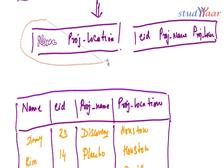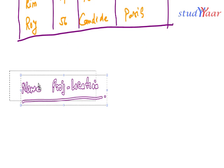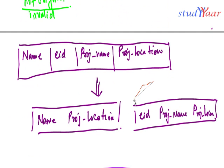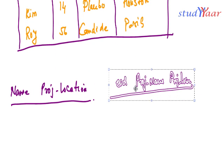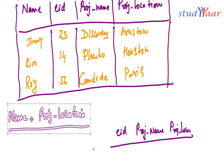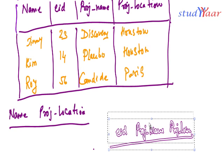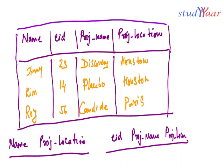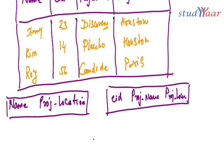Now I have my complete original table. Since I have decomposed it into two tables, let's do the decomposition. I have the original table and my two new decomposed tables. Let's look at what the values would be.